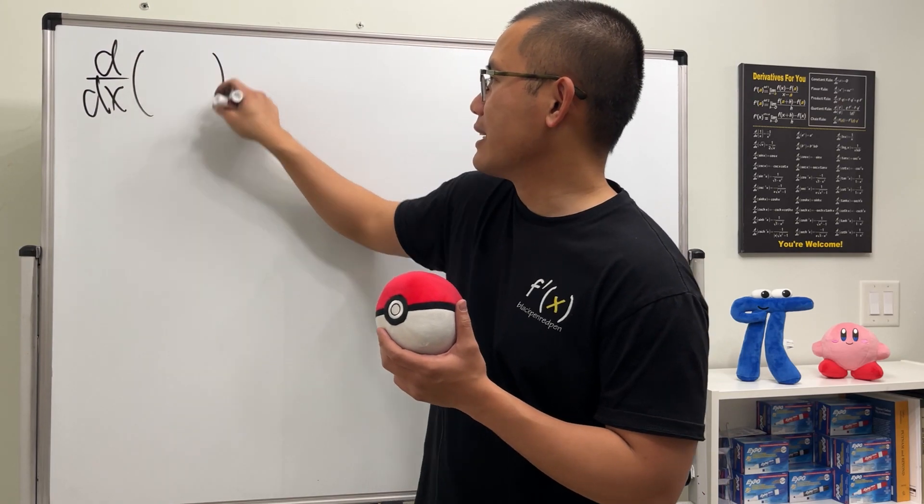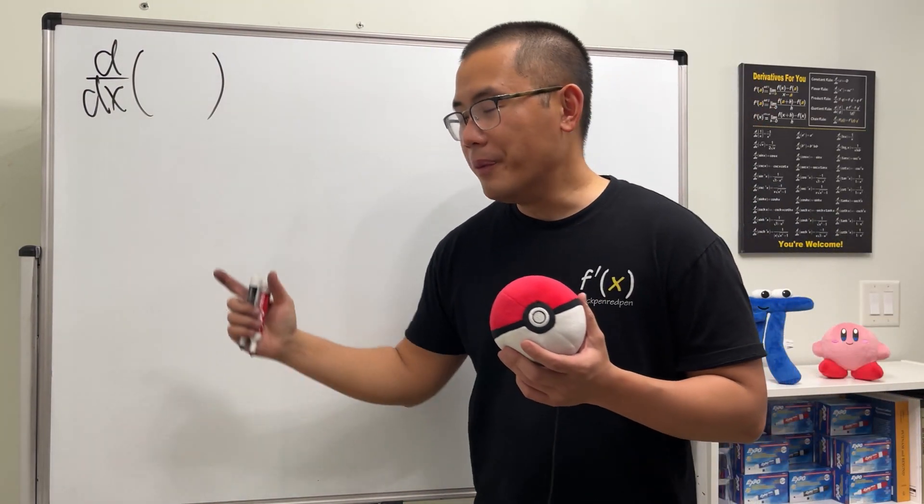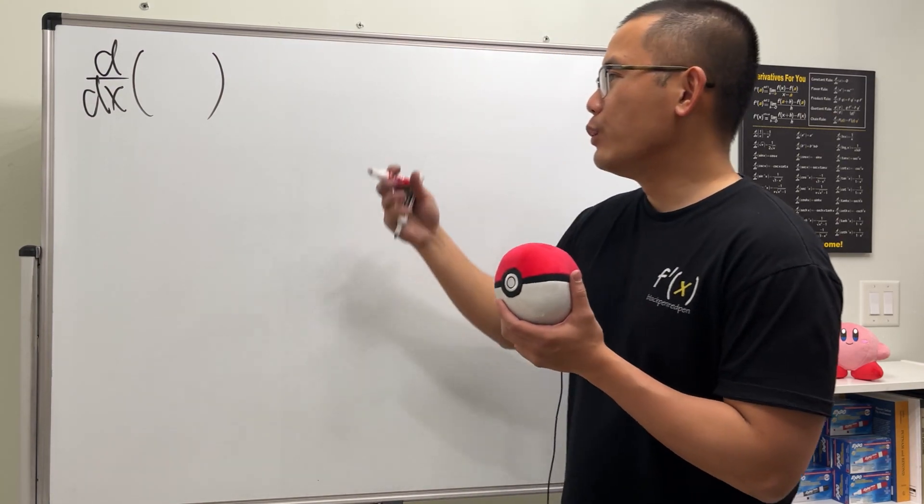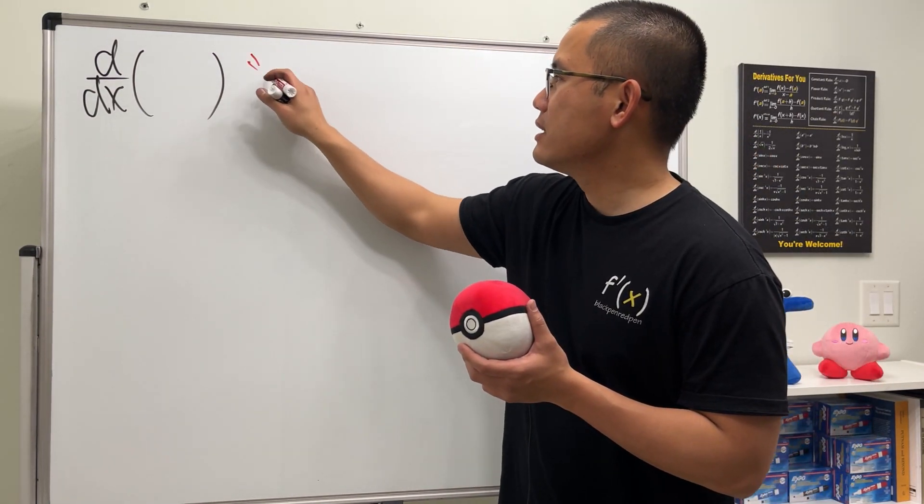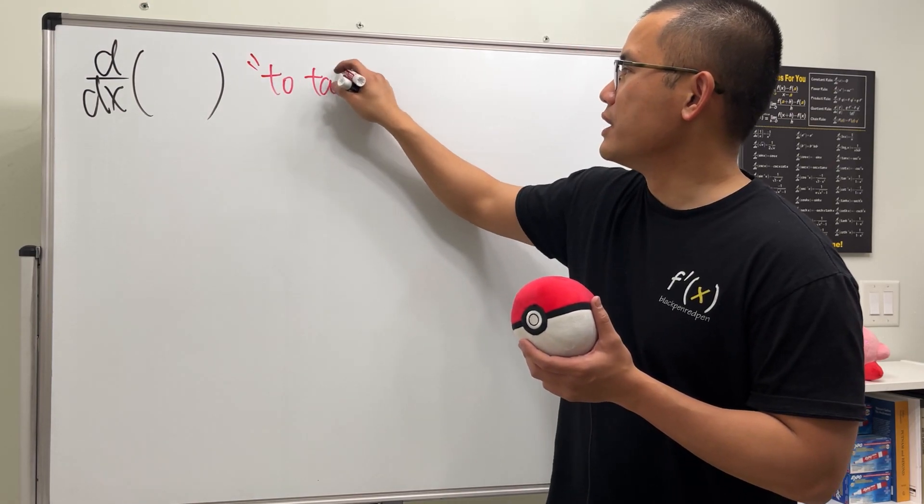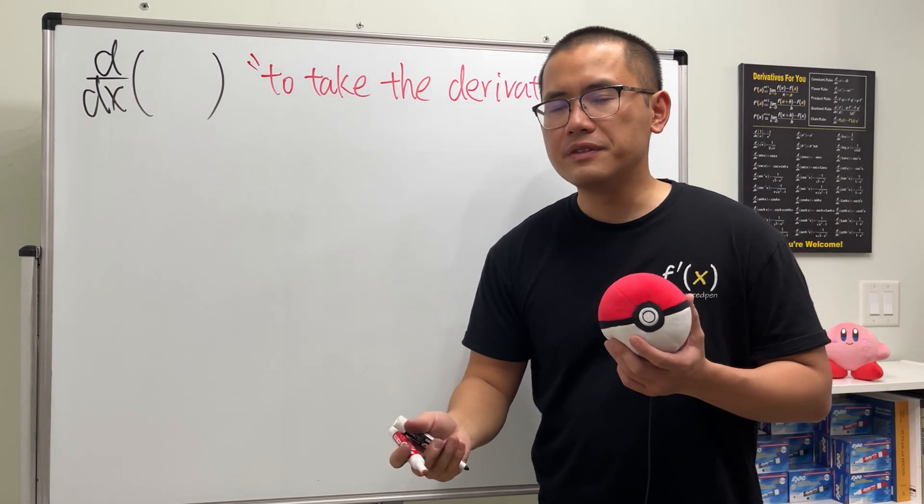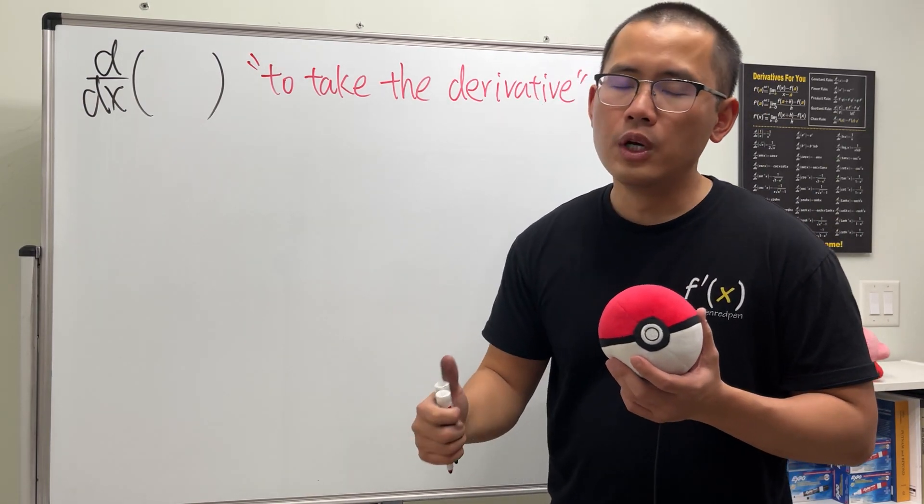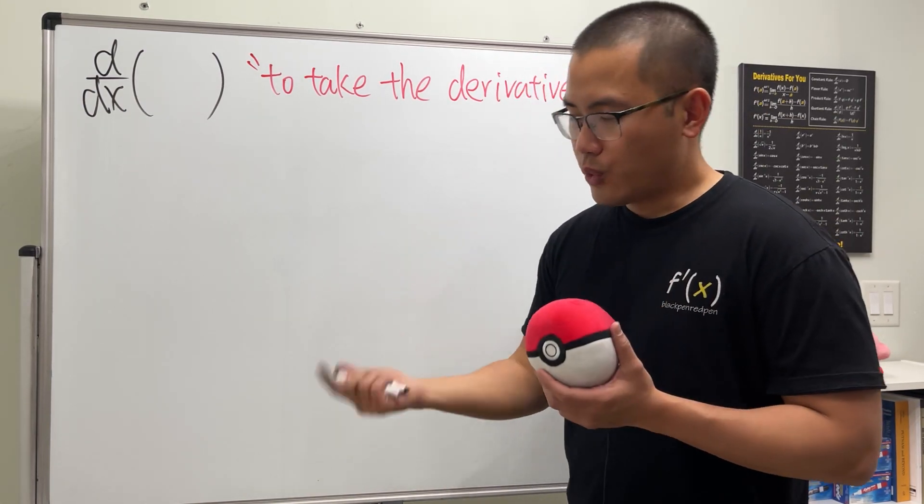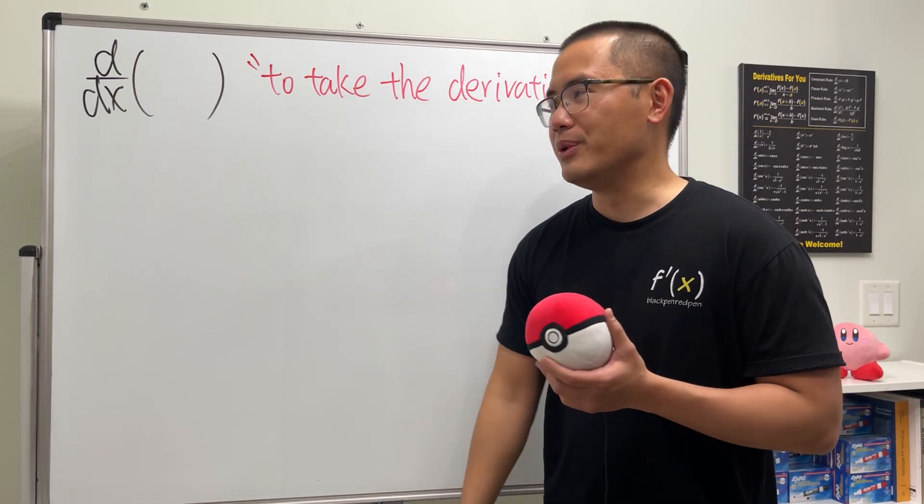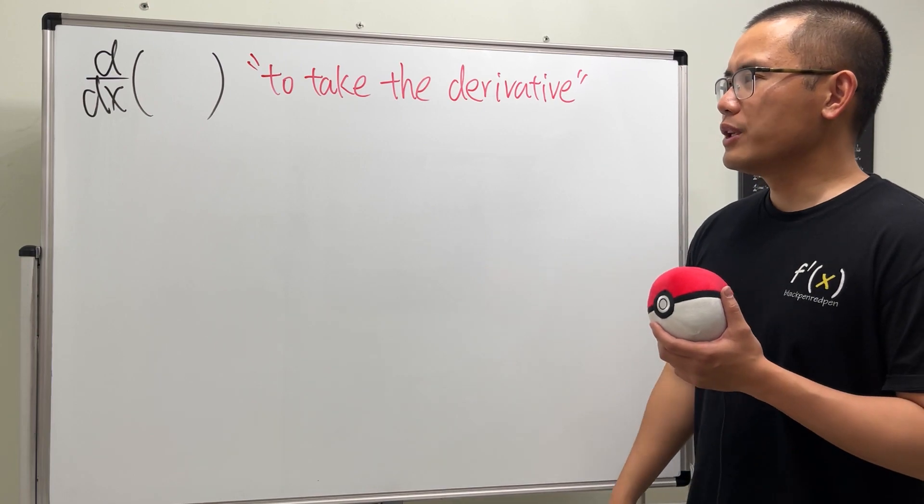Let's start with d/dx with a parenthesis like this. Let me tell you, this right here is an action, this is an operation. The way that people will say this is we will take the derivative, and of course there are different ways to take derivatives such as we can use the power rule, we can use the quotient rule, or maybe we can use the definition of derivative.